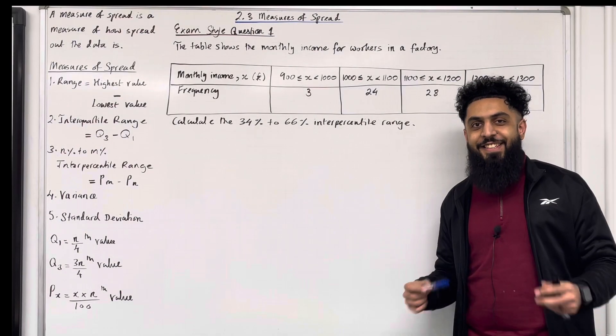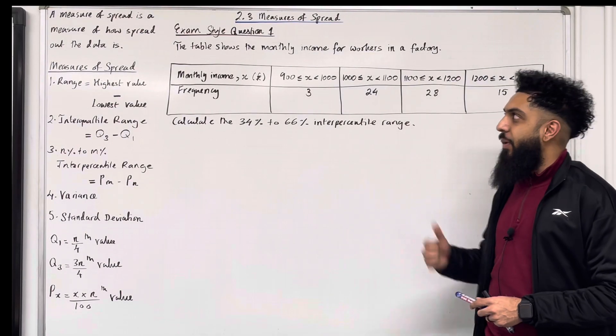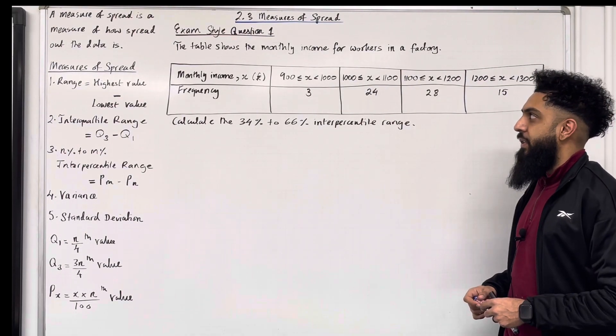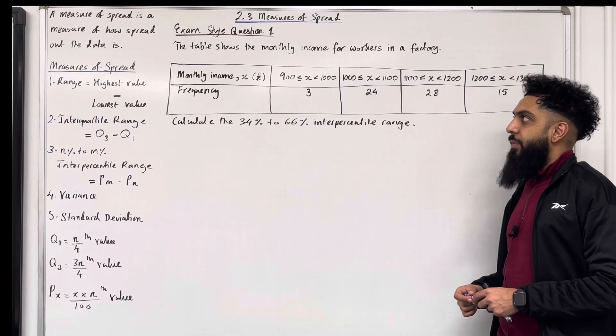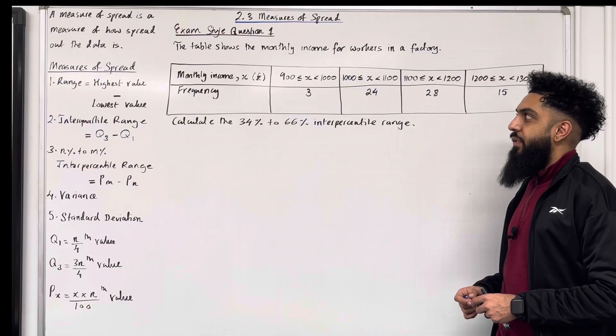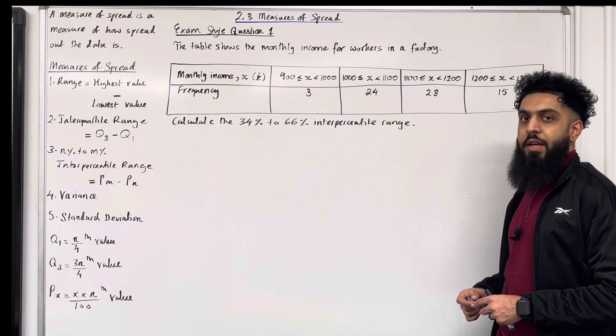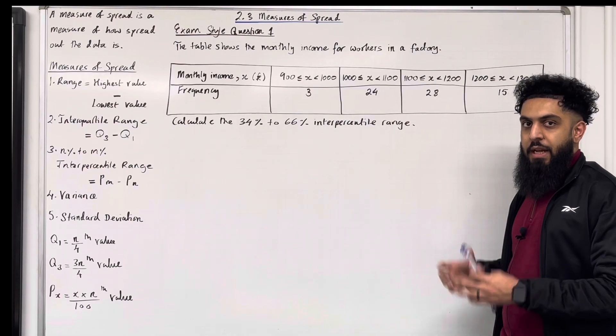Welcome back. In this teaching video I'm looking at 2.3 measures of spread. 2.3 represents chapter 2 section 3 of the Pearson A Level Statistics 1 textbook.